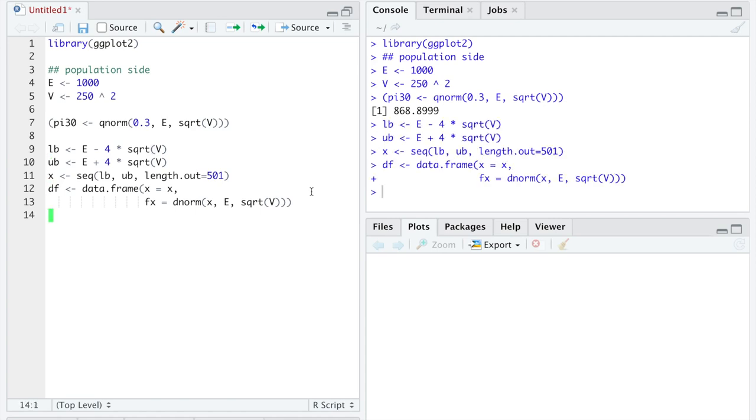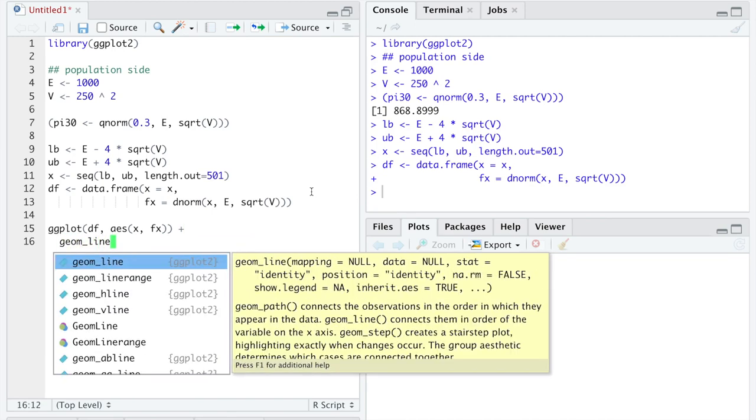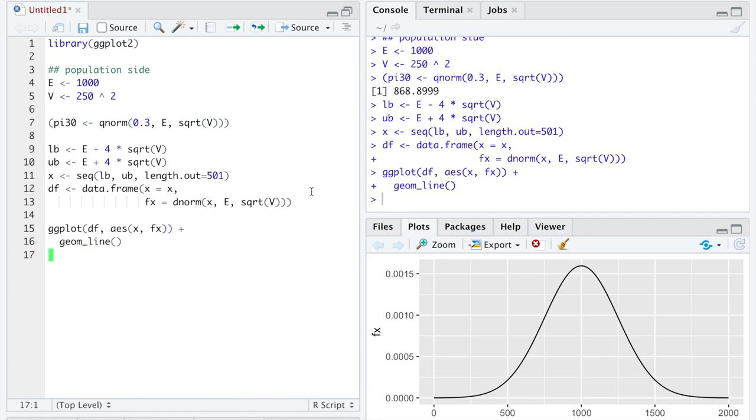Let's run all these to make sure there's no errors. Then using our function ggplot from the library ggplot2, we could draw the density function that represents the SAT scores with a mean of 1,000 and a standard deviation of 250.